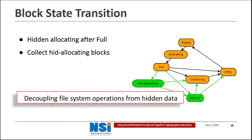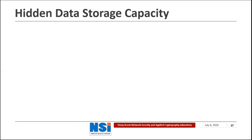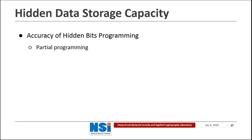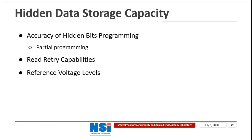Except for all three mechanisms used in Infuse to solve the challenges mentioned, we also have some other mechanisms which are detailed in the paper. Another thing we want to mention is the hidden data storage capacity in Infuse. Storing hidden data inside NAND Flash requires changing the voltage of the cells. The more hidden data stored in the device, the more obvious the changes are. The hidden data capacity is related to a lot of factors: first, the accuracy of the hidden bit programming — the more accurately we can set the voltage with partial programming, the more hidden data we can store. Other factors include the read-retry capabilities supported by the NAND Flash device and the reference voltage levels supported by the hardware.